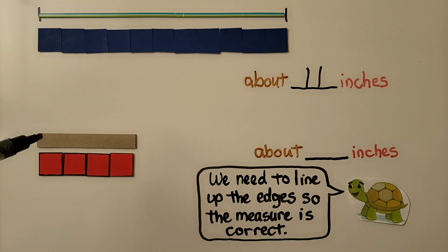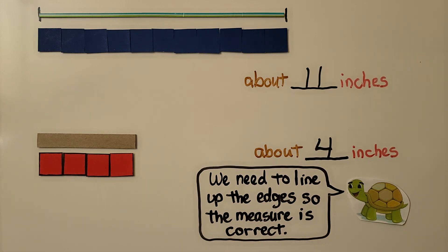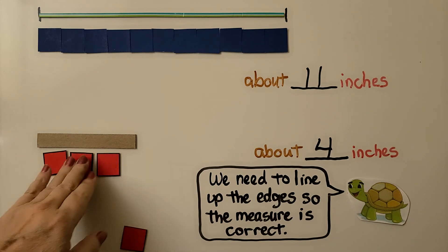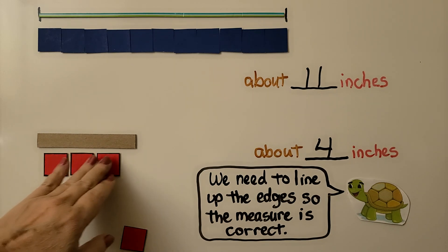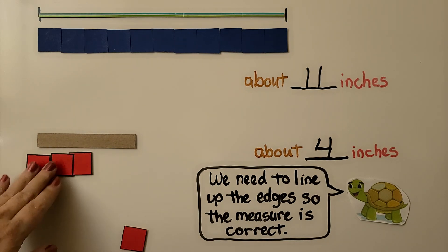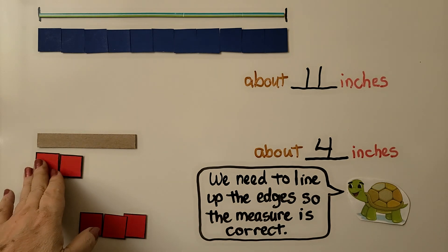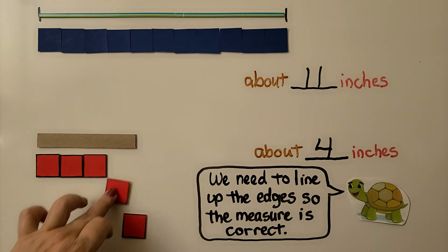We want to measure this little strip of cardboard. We line up the color tiles nice and neat so there are no gaps or overlaps — we want it straight, lined up on both edges. We count: one, two, three, four. It's about four inches long. We need to line up the edges so the measurement is correct. If tiles have gaps or overlaps, we might incorrectly count three or squeeze in five. Make sure they're spaced nicely with no gaps or overlaps.